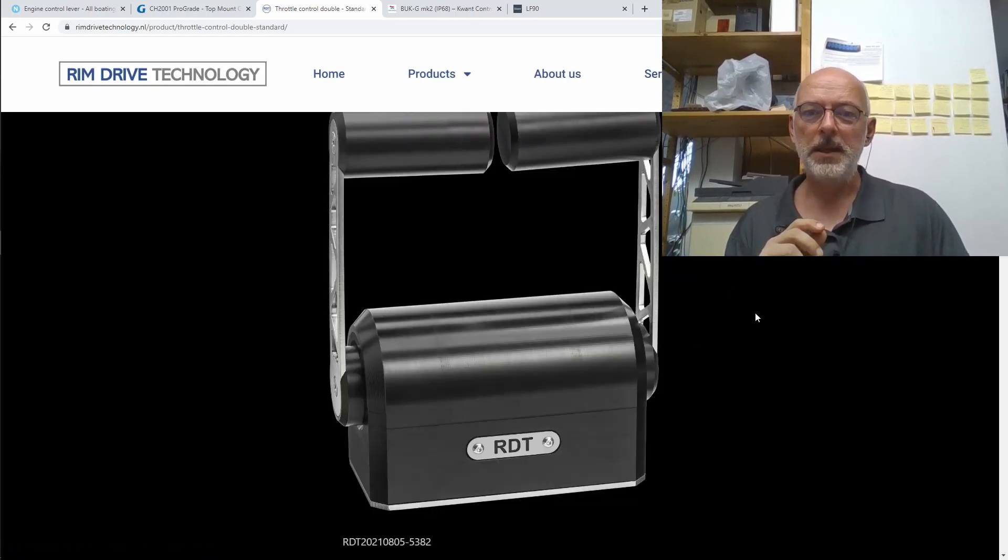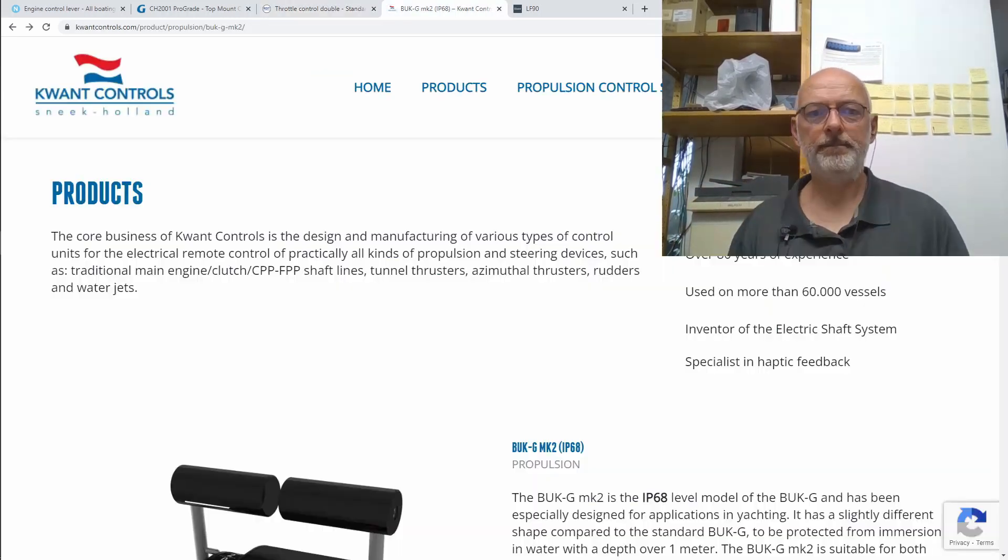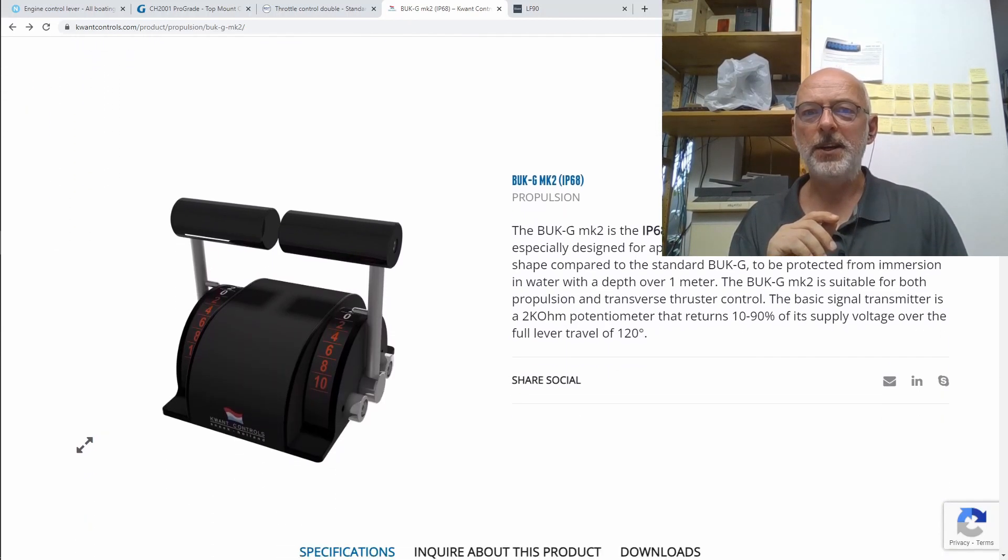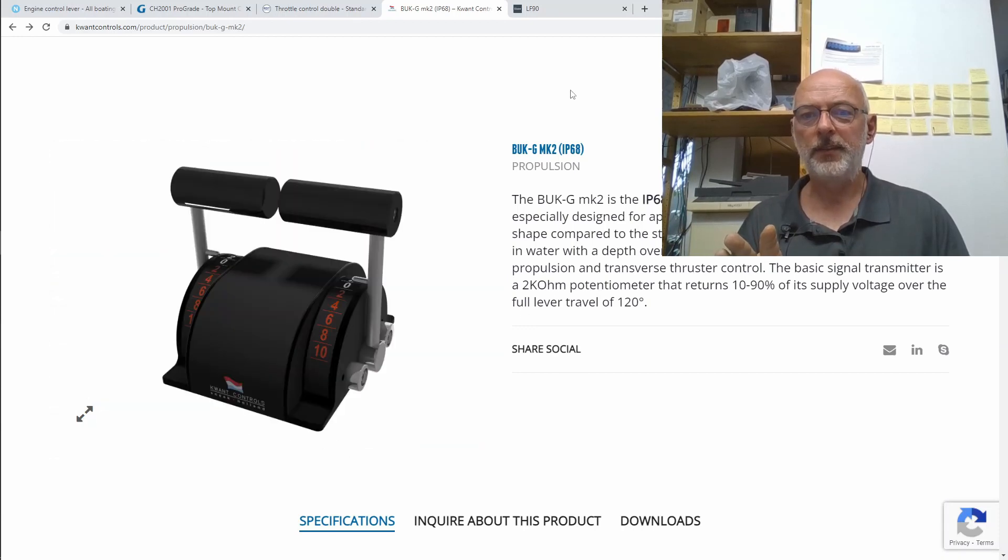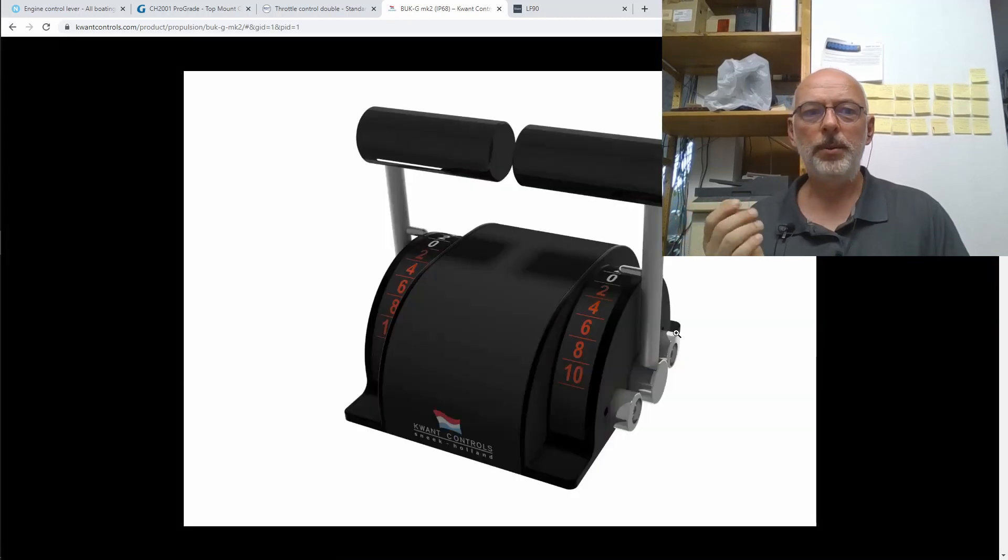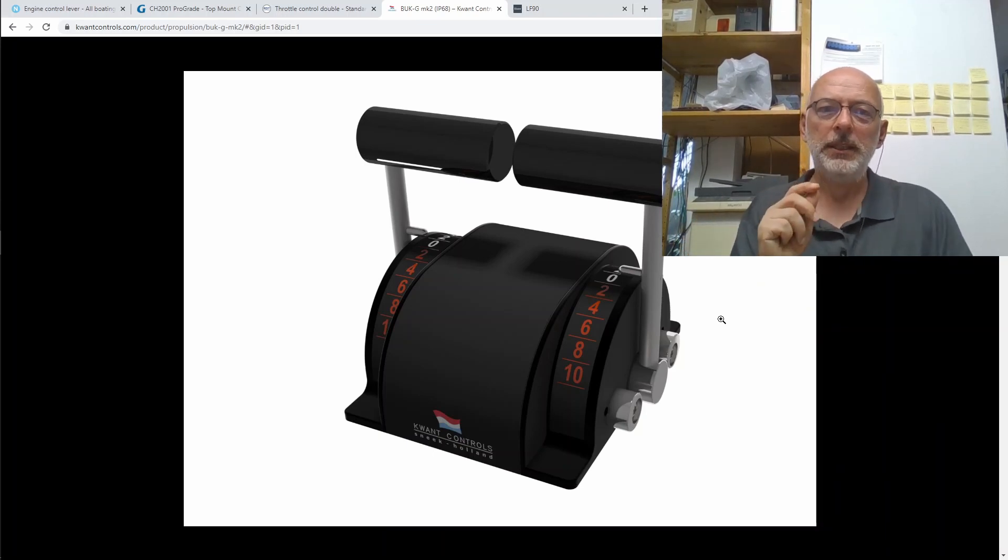Up to now we just looked at products for pleasure vessels, not for commercial vessels. So just to be complete, we have a look here at Kwant Controls from Holland, I guess. They have here this nice - I really like that design - the Bug-G Mk2. It's of course IP68. I like that design, really like it, a little bit too complicated for what I will be able to do, but still very nice.